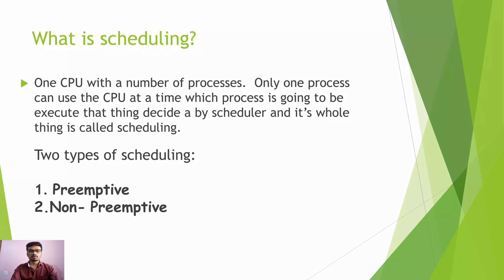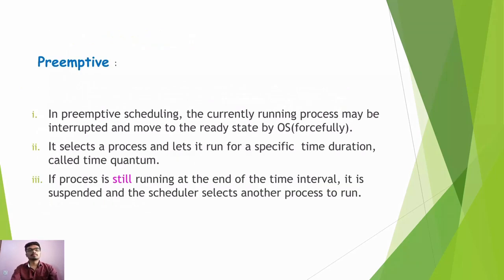There are two types of scheduling: preemptive scheduling and non-preemptive scheduling. In preemptive scheduling, the currently running process may be interrupted and moved to the ready state by the OS forcefully. It selects a process and lets it run for a specific time duration called time quantum. If the process is still running at the end of the time interval, it is suspended and the scheduler selects another process to run.